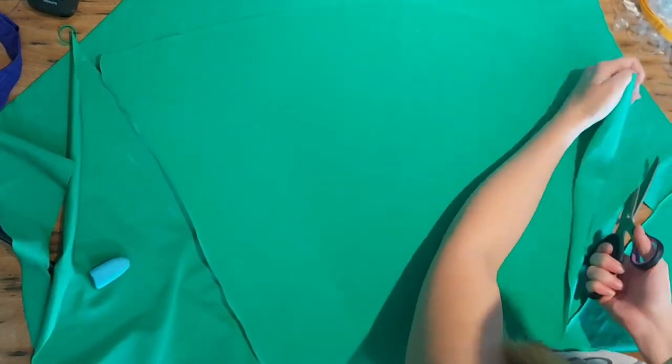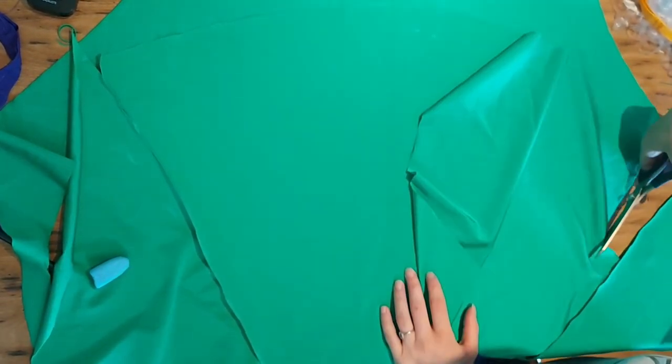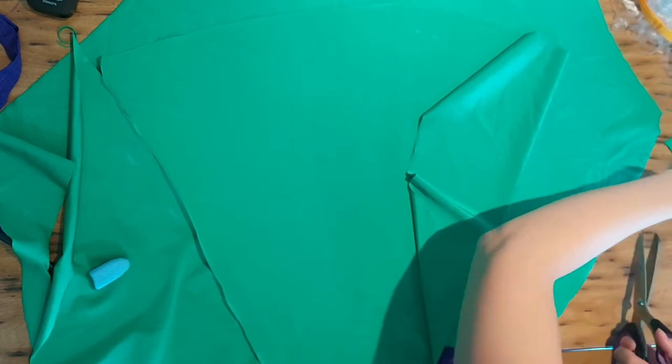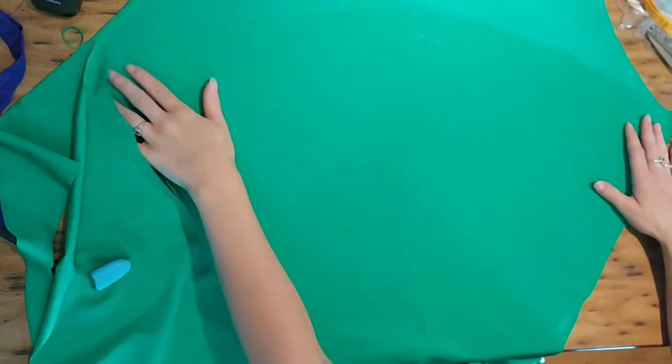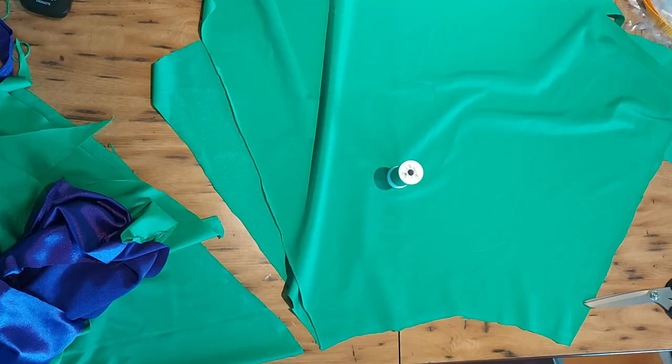But basically, it's basically the exact same thing as I did before, only I am making it a little bit longer in the very center at the top. And yeah, that's about it. Anywho, once that is cut out, it is time to move on to the little green tulle organza stuff that I used on top.